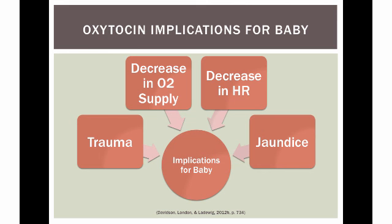Side effects of oxytocin for the fetus are mainly associated with hypercontractility of the uterus, which can cause a decrease in uteroplacental oxygen supply to the baby. It can also cause a decrease in fetal heart rate. Side effects also include trauma from rapid birth and jaundice when oxytocin is administered for augmentation of labor in the first and second stages.